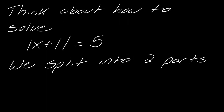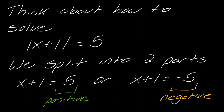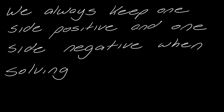We split the equation into two parts: x plus one equals five, and then x plus one equals negative five. There's a positive side and a negative side. We always keep one side positive and one side negative when solving — that's the key thing to remember. The solutions equal five and negative five, and this actually makes sense.